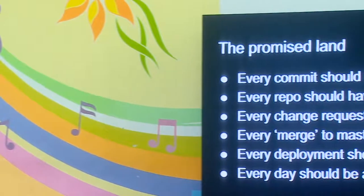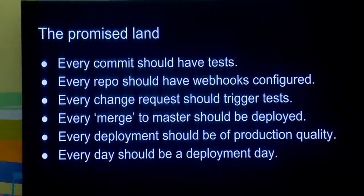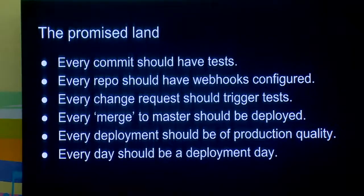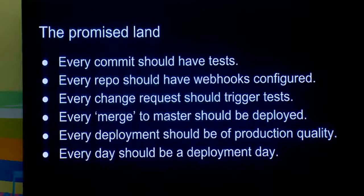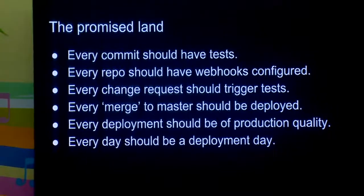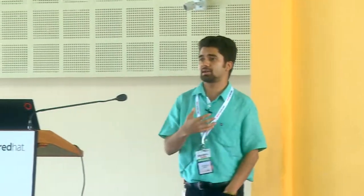I'm going to show how being continuous is going to help you ensure that you can be agile, and truly be able to deploy every day and release as soon as possible. The ground rule is: every commit should have tests — no tool can enforce that alone, only a developer and an engineering manager who enforces this within the team, meaning no change request is accepted without tests. Your repo should have webhooks configured to ensure builds get triggered. Your change requests will trigger tests. Every merge to master should actually be deployed in an environment, and every day should be a deployment day — if you make a fix today, there should be no big reason why it cannot go to production today itself.